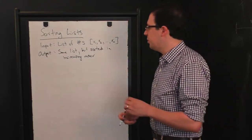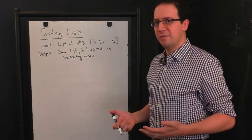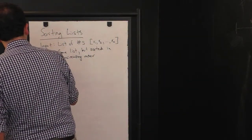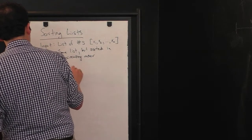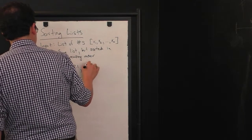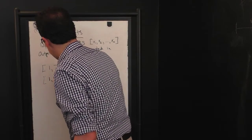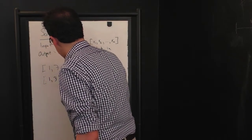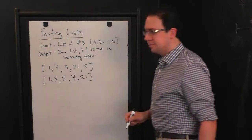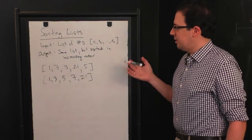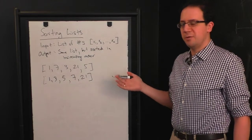So just as an example, an input might be something like 1, 7, 3, 21, 5. And then the output should just be 1, 3, 5, 7, 21. So this is the problem. And we would like to come up with efficient algorithms to solve this.